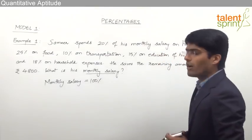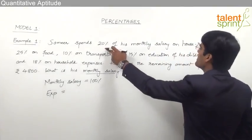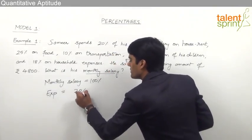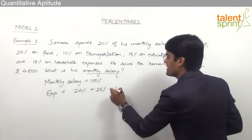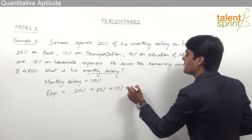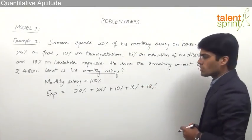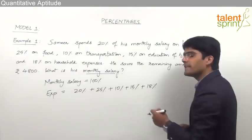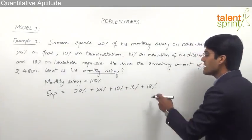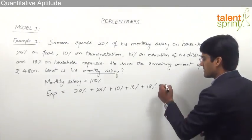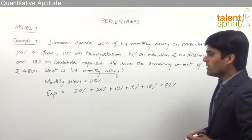Now let us find out the total expenditure of Samir. The total expenditure here is: 20% on house rent, plus 25% on food, plus 10% on transportation, plus 15% on education of his children, and 18% on household expenses. Altogether, the total expenditure is 20 + 25 = 45, plus 10 = 55, plus 15 = 70, plus 18 = 88%. So the total monthly expenditure of Samir is 88%.